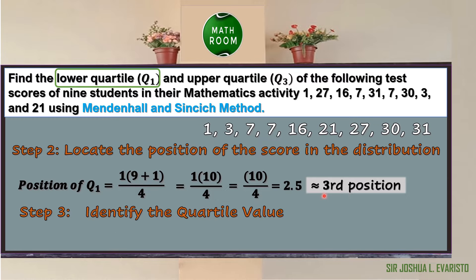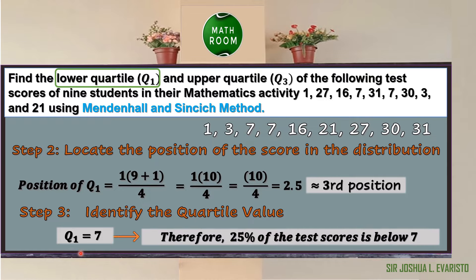Step 3: identify the quartile value. The lower quartile Q sub 1 is the third data element. The first data is 1, the second is 3, and the third is 7. Therefore, Q sub 1 = 7. Since Q sub 1 means 25% of the distribution, 25% of the test scores is below 7.